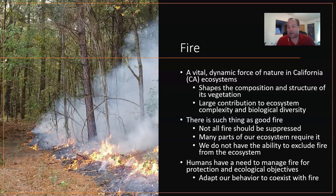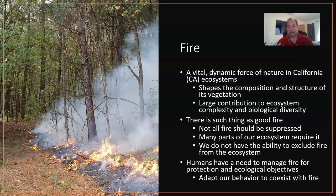A key statement here: we do not have the ability to exclude fire from the ecosystem. That's why it's called fire suppression — we can suppress fire, we can stop some fires when they start, but we cannot keep fire out of the ecosystem. Fire is going to happen one way or another. We just have to decide: do we want little fires or huge mega fires? The little fires, like in this picture — cleaning up the ecosystem, getting rid of some fuel and shrubs, allowing for biodiversity — those are good fires. Having those types of fires prevents us from having big mega fires.